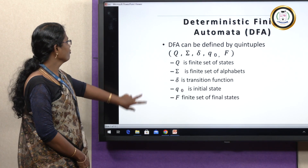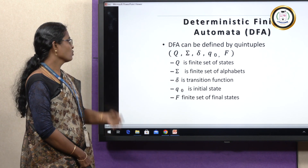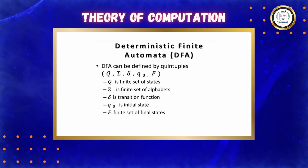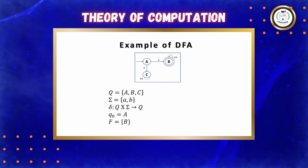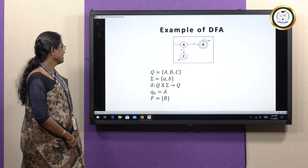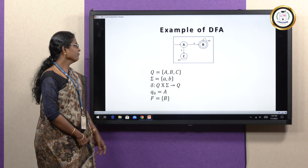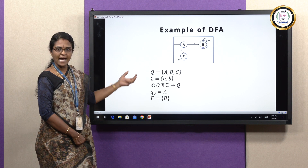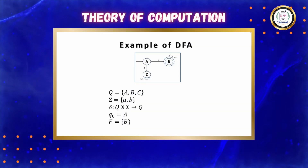Here is an example for DFA. The five tuples — Q, Σ, δ, Q₀, and F — represent various states, since input is received through various intermediate states. This diagram is called a transition diagram. From the given diagram, you can easily analyze and obtain the inputs for each state corresponding to Q, Σ, δ, Q₀, and F.